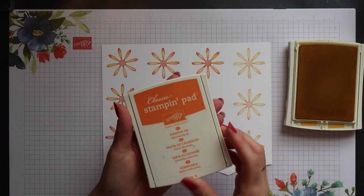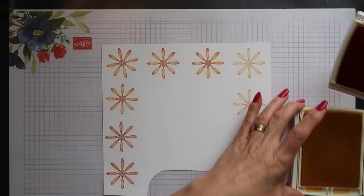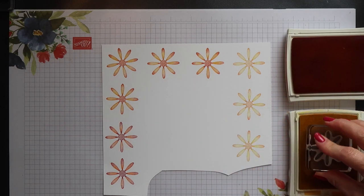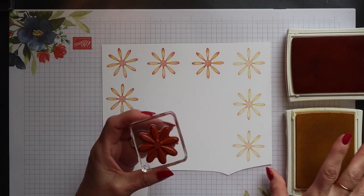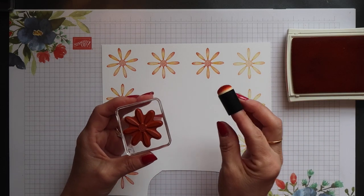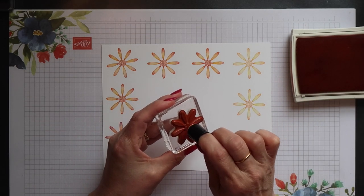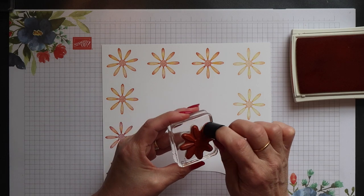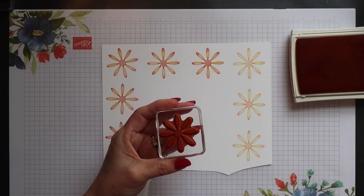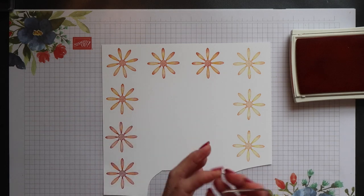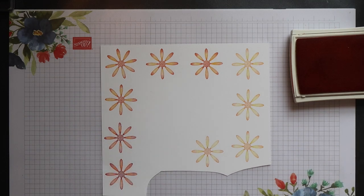I'm starting with Daffodil Delight ink, but I'm going to add a little Pumpkin Pie to give that lovely two-toned effect. I'm inking my stamp up fully with Daffodil Delight, and then I'm going to take a sponge dauber and pick up just a little Pumpkin Pie, dab it in the centre of the flower and also on the end of each of the petals, and then just stamp it down.